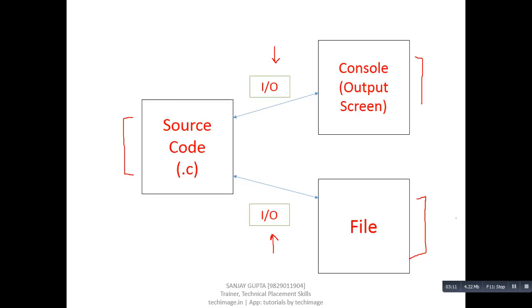There are many examples we can relate with the file handling process. For example, in an ATM machine there is software known as source code, the screen can be considered as the console, and the results of all transactions are permanently stored inside files. If we take the example of a website, the source code of a website is a program, and when we execute it, it is displayed on the screen. When we perform any operation on that website, it stores all input and output inside its permanent database or file. When we log out and log in again, we automatically receive all the input and output from previous operations.